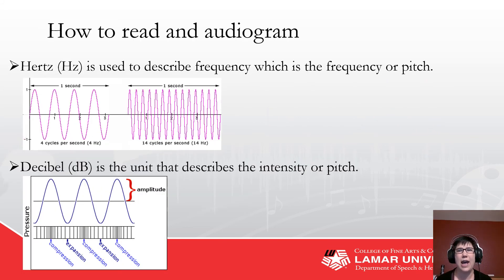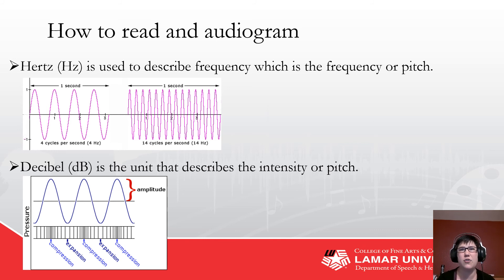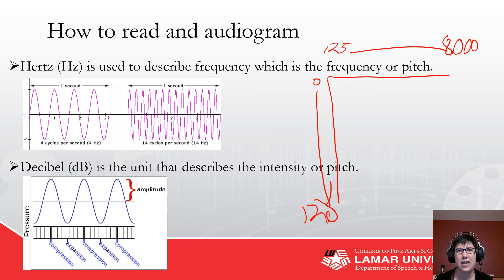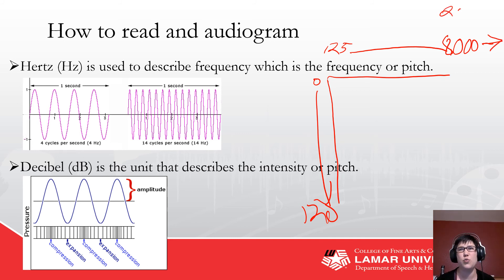Let's talk about how you read an audiogram and what it means. It's a graph plotted with regards to both pitch — or Hertz frequency — and decibels. Typically, most American audiograms are going to be 0 to 120 dB and 125 to 8,000 Hertz. That's evolving a little bit, and you do have high frequency headphones that go above 8,000 Hertz. Our audiometers can actually go out to 20,000 Hertz.